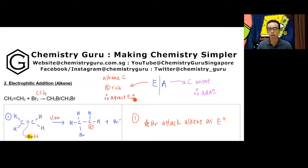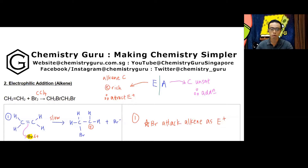Very simple idea: if I'm electron-rich I react with electron-poor species; if I'm electron-poor I react with electron-rich species. If I'm minus I'll react with a plus, and vice versa. The second portion is the type of reaction — addition. Alkene is unsaturated, so it can undergo addition reaction. Unsaturated species tend to undergo addition; saturated species tend to undergo substitution.